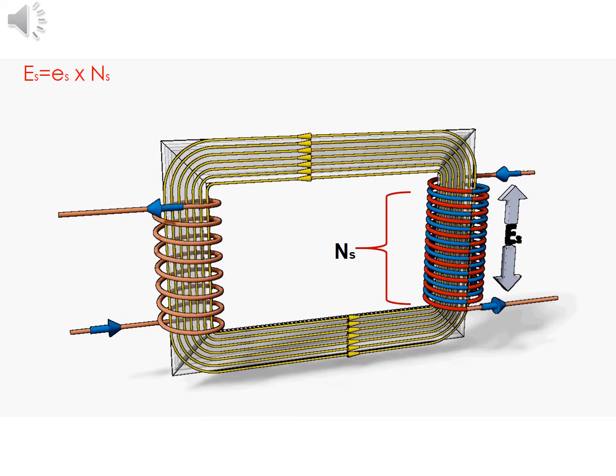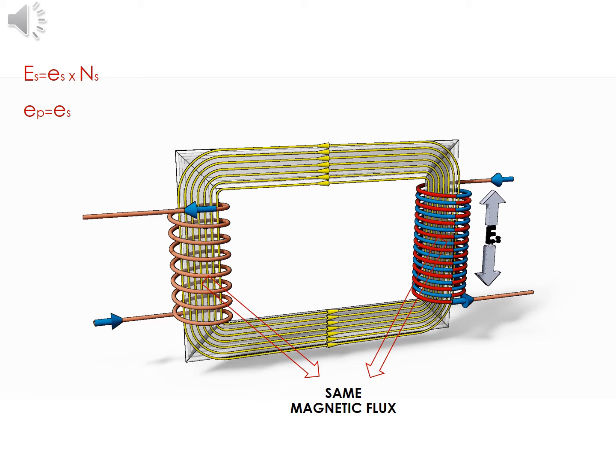Since the turns are arranged in a series, the net EMF induced across the winding will be the sum of the individual EMFs induced in each turn. Since the same magnetic flux is passing through the primary and secondary coils, the EMF per turn for both the primary and secondary coils will be the same.